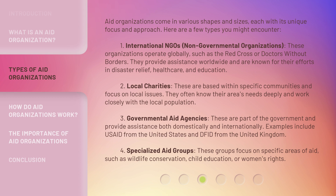Three: governmental aid agencies. These are part of the government and provide assistance both domestically and internationally. Examples include USAID from the United States and DFID from the United Kingdom. Four: specialized aid groups. These groups focus on specific areas of aid, such as wildlife conservation, child education, or women's rights.